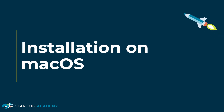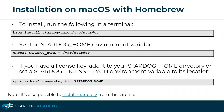This section is about installation on macOS. The recommended method for installing Stardog on macOS is to use Homebrew. With Homebrew installed, you can open a terminal and run the command: brew install stardog-union/tap/stardog. You'll need to set the Stardog home environment variable with: export STARDOG_HOME=/var/stardog. If you have a license key, add it to your Stardog home directory or set a STARDOG_LICENSE_PATH environment variable to its location. It's also possible to install manually from the zip file.